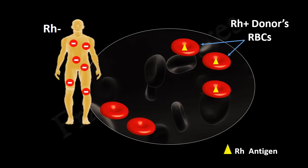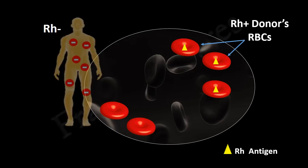If blood from an RH positive donor is transfused into an RH negative recipient, an immune response will be induced in the RH negative recipient. This is because, to the immune system of an RH negative person, these RH antigens are foreign or non-self.